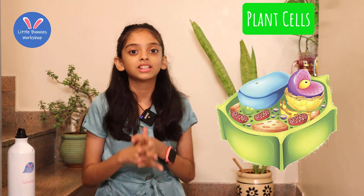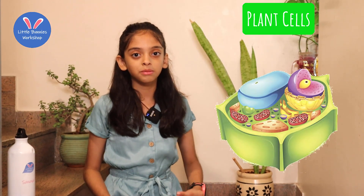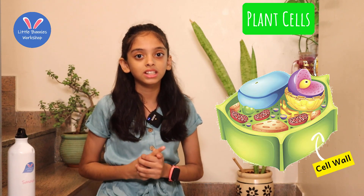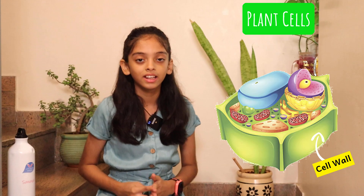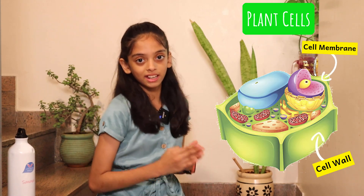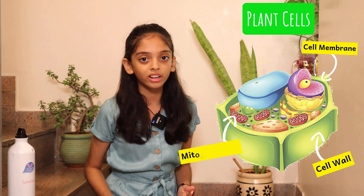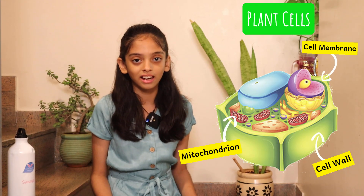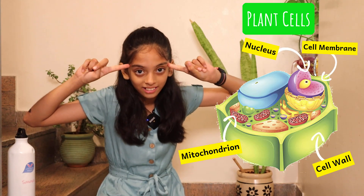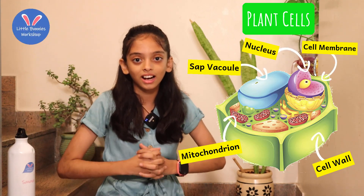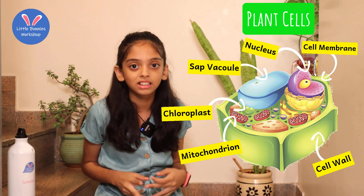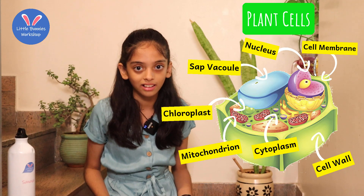Now let's quickly recapitulate what we learned about plant cells. Cell wall keeps the cell in shape and protects it. Cell membrane controls what goes in and out. Mitochondria — the powerhouse of the cell. Nucleus — the brain. Sap vacuole contains cell sap. Chloroplasts create the food of the cell.